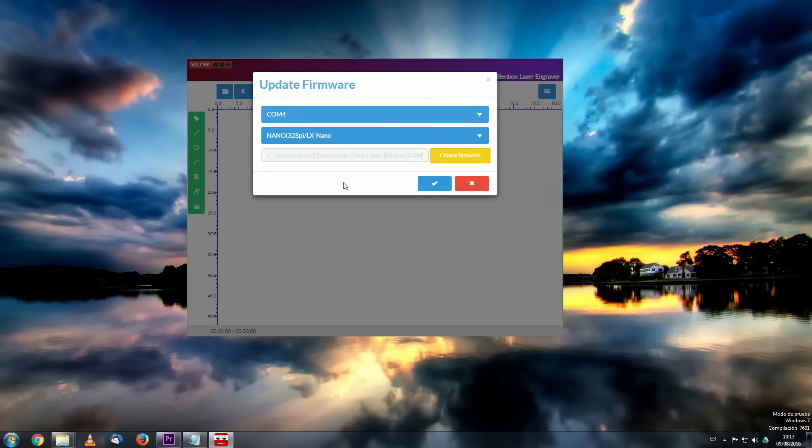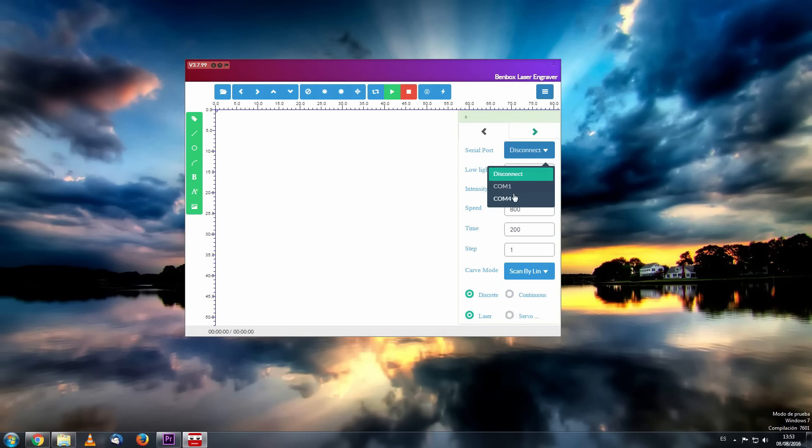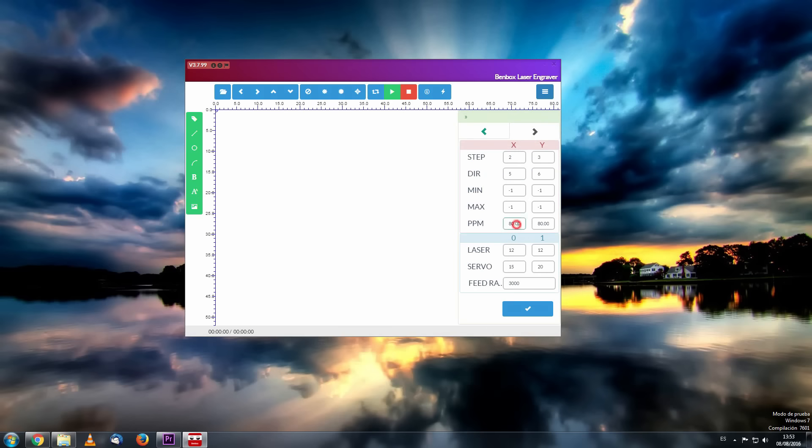Once loaded, we choose the COM port associated with our controller, and press the right arrow to change the PPM and feed rate values.